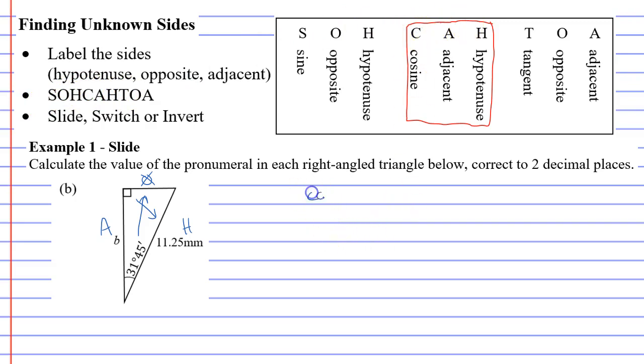C stands for COS. Next to COS, or cosine, we're going to write our angle, which in this case is 31 degrees 45 minutes. Then an equal sign, then the vinculum bar. Now, following the order, after C comes A for adjacent. A in this case is the letter or pronumeral B. And H comes last, which is 11.25. So that goes at the bottom of the fraction.